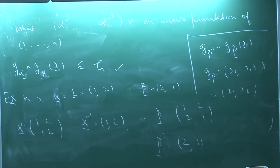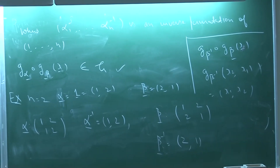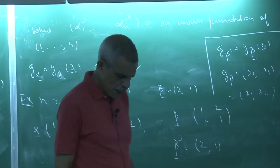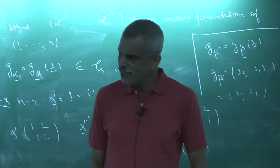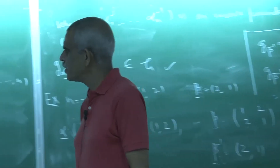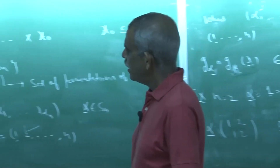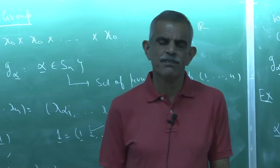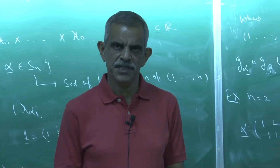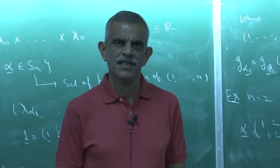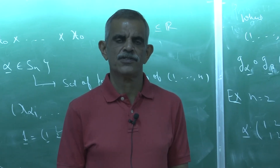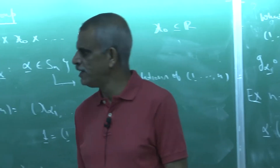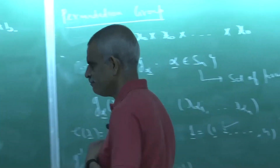That was all about groups of transformations. Next, I will talk about when a set of probability distributions is said to be invariant under a group of transformations.